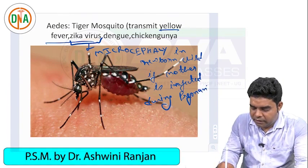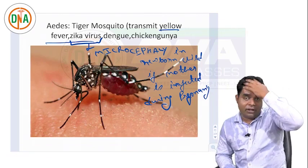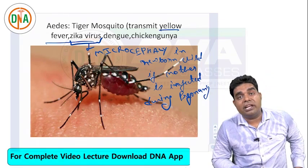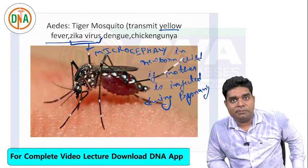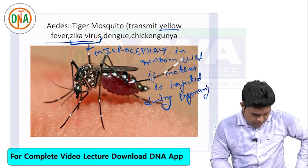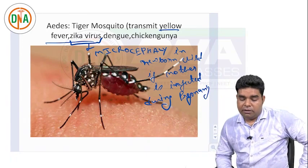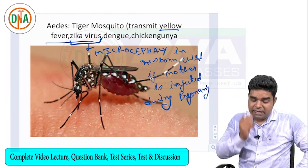But along with this small head, Zika virus has also been found to be associated with Guillain-Barré syndrome, or GB syndrome. So these are the four diseases transmitted by Aedes.